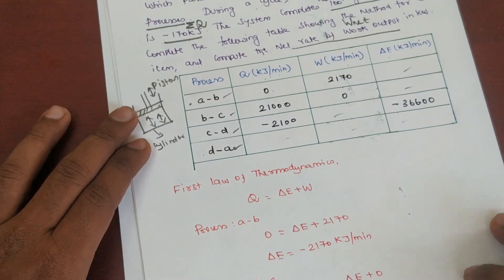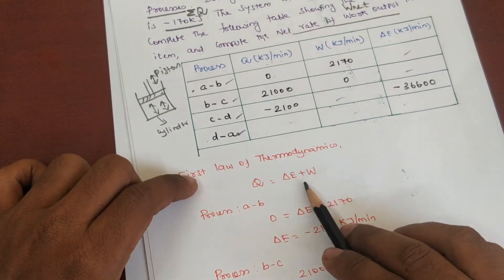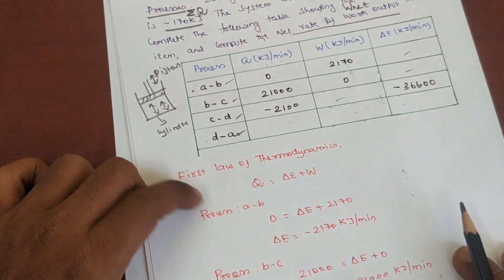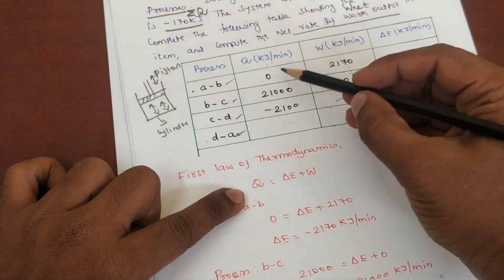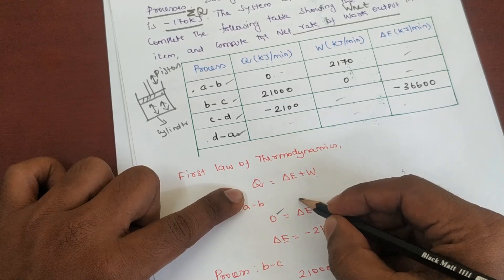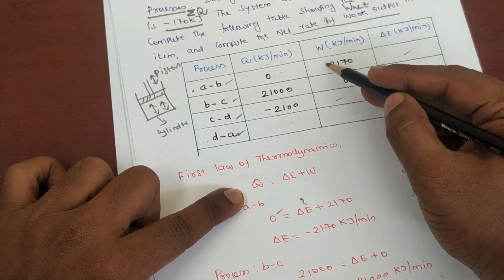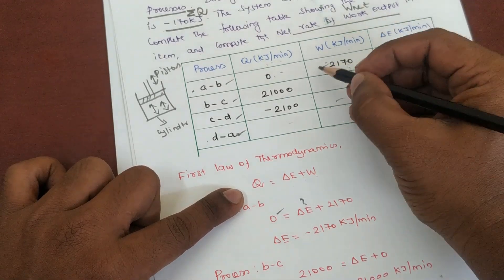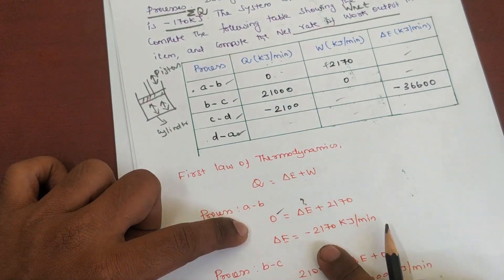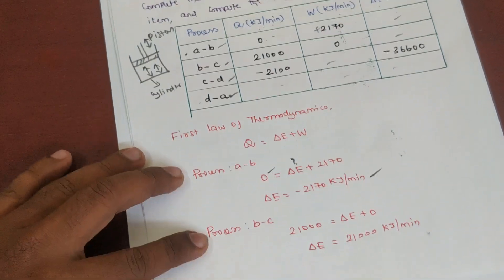Using the first law of thermodynamics: Q equals ΔU plus W. For process A-to-B, W is controlled and the value is 2170 kJ/min. Substituting: 0 equals ΔU plus 2170, so ΔU is equal to minus 2170 kilojoules per minute.